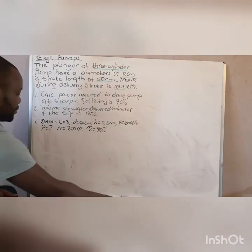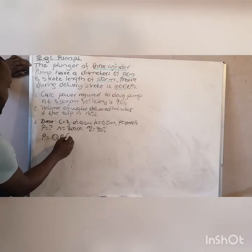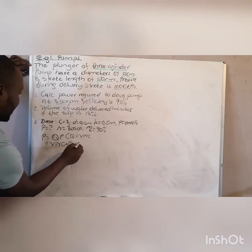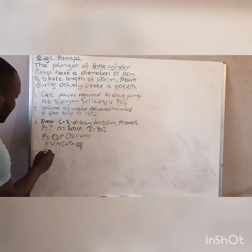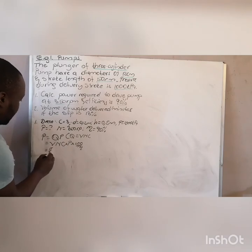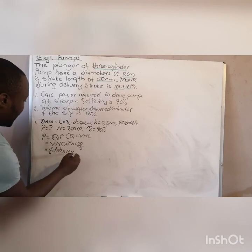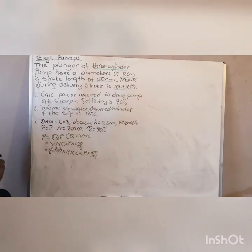From the equation I gave you, power equals the quantity of liquid delivered times pressure. Your Q is V times N times C, so power equals V times N times C times pressure times 100 over efficiency. Your volume is area times height, which is π/4 times d squared times the stroke length h. So the full equation becomes: (π/4 × d² × h) × N × C × pressure × 100 over efficiency.